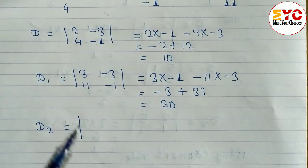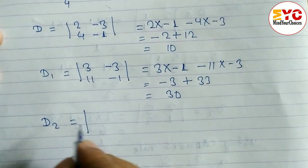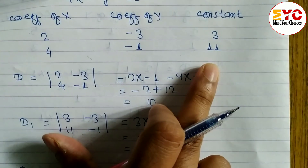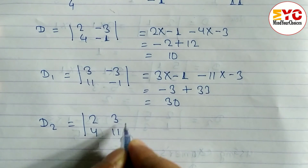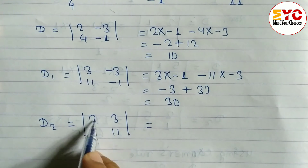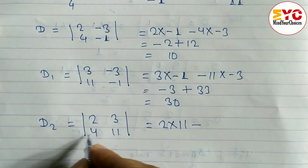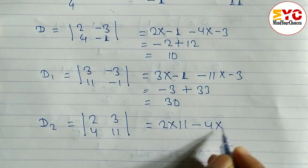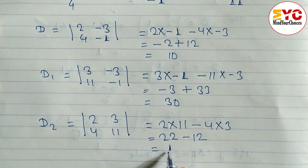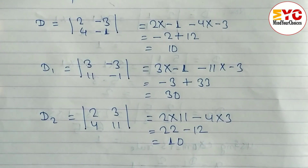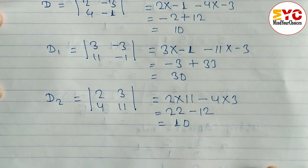To find D2, we take the coefficients of x and the constant numbers: 2, 4 and 3, 11. We multiply the main diagonal: 2 into 11 minus 4 into 3, which gives 22 minus 12, equal to 10. So D2 is equal to 10.